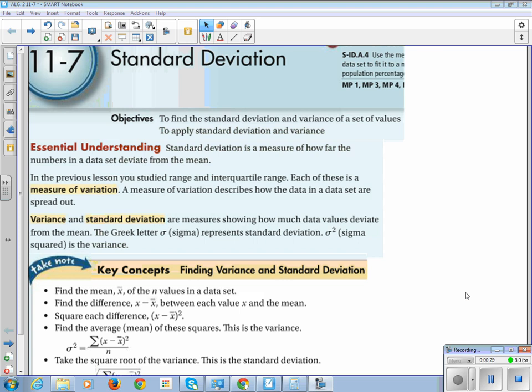This is the statistics part, 11-7 Standard Deviation. Our learning objectives are to find the standard deviation and variance of a set of values and to apply standard deviation and variance. Our essential understanding is standard deviation is a measure of how far the numbers in a data set deviate from the mean.